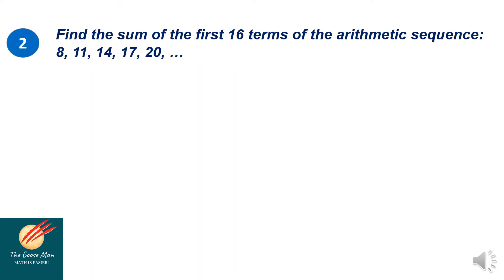Let us consider problem number 2: find the sum of the first 16 terms of the arithmetic sequence 8, 11, 14, 17, 20, and so on. The common difference is 3. Our first term a sub 1 equals 8, n equals 16, and we want to find the sum of the first 16 terms.